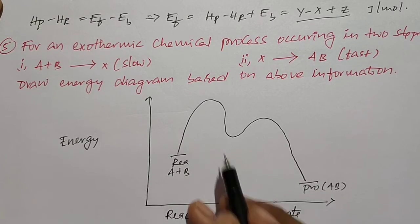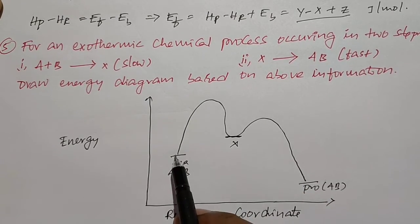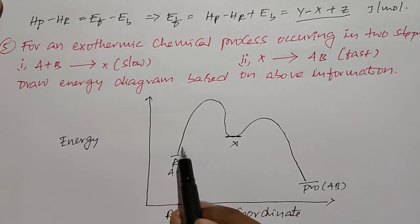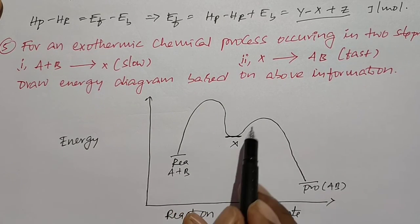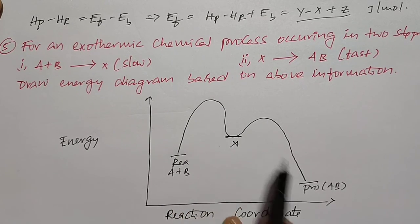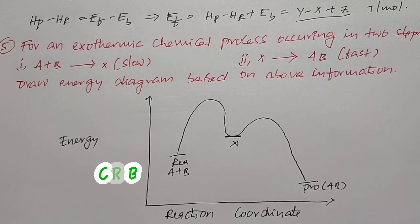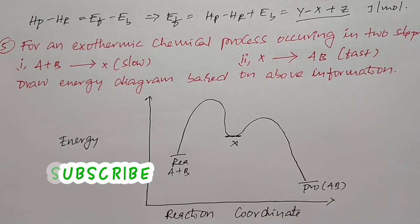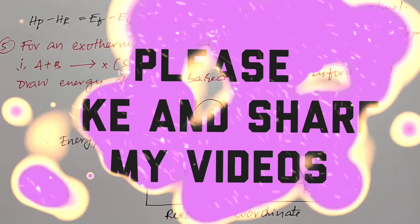The graph shows the reaction intermediate between the two steps. This is the indication of the first reaction — the slow reaction, taking more time. And this is the indication of the fast reaction, the second step. This is the energy diagram based on the given information. If you like this content, please subscribe to my channel, like and share my videos. Thank you.